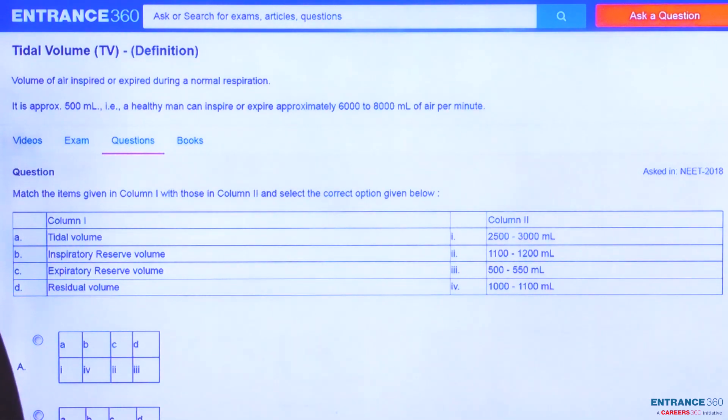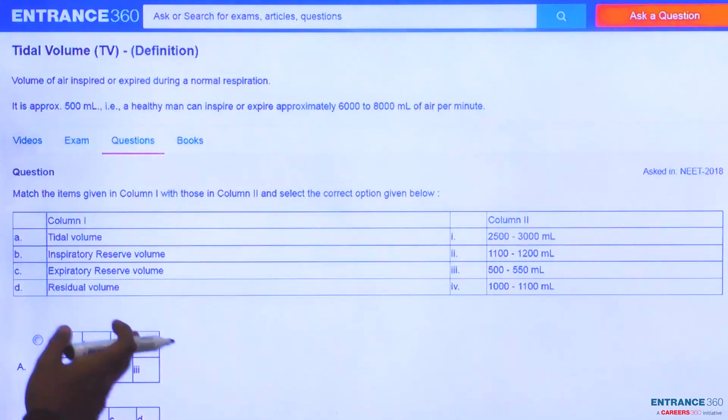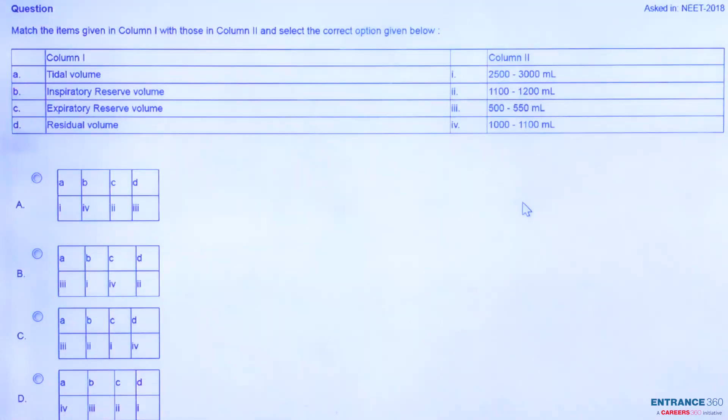The question says match the items given in column one with those in column two. We have four items A, B, C, D in column one and we have to match them with the respective items in column two. We will discuss it, understand the concept, and then proceed to find the correct answer.